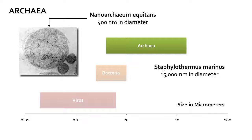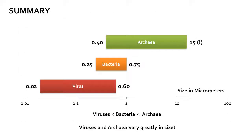In summary, it is too simplistic to conclude that viruses are 10 or 100 times smaller than bacteria due to the large variability in the size of viruses. In general, however, the order of magnitude rules hold: virus smaller than bacteria, smaller than archaea.